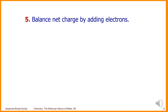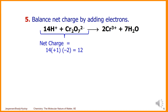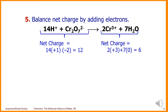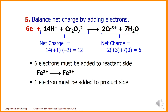Step five: balance net charge by adding electrons. The net charge on the left side is +14 plus −2, which equals +12, and the net charge on the right side is +6. So we must add six electrons to the reactant side.